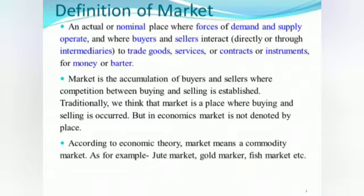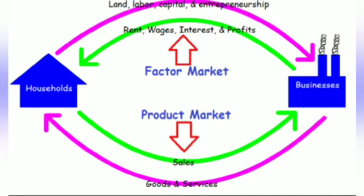The first type is the product market, or goods market — these are markets where consumer goods and services are bought and sold. The second type is the factor market — these are markets where factor services are bought and sold.